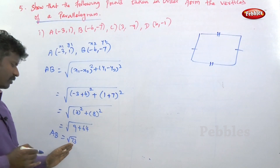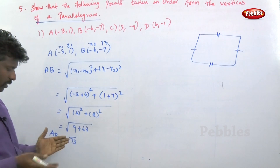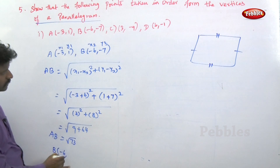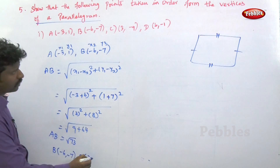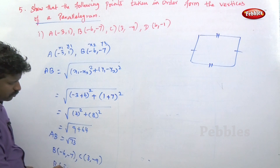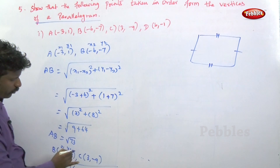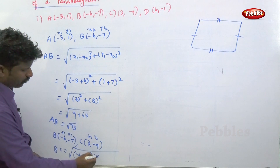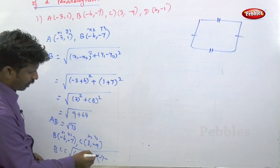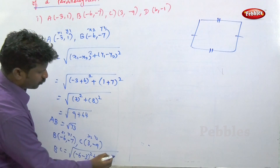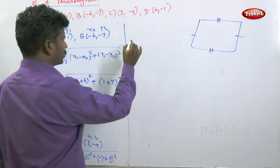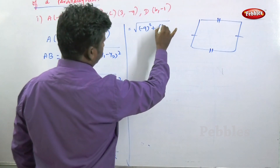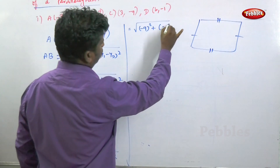AB is equal to root 73. Next, the B point is (-6, -7) and the C point is (3, -9). BC is equal to root of (x1 minus x2) whole square plus (y1 minus y2) whole square. So x1 is -6, x2 is 3, y1 is -7, y2 is -9, giving root of (-6 minus 3) whole square plus (-7 plus 9) whole square.